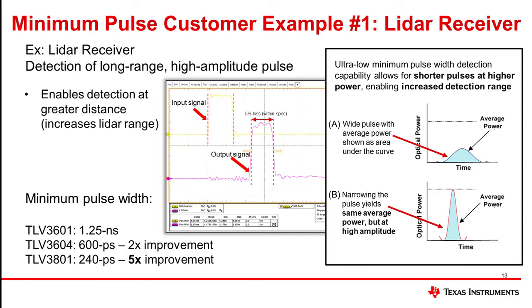But how does this affect a specific application? Going back to the LiDAR receiver, this can actually be really important. We see how the pulse width can reduce the average power from case A to B. If we raise the amplitude but narrow the pulses, we maintain the same average power. This can be helpful in LiDAR receivers where detecting objects at greater distances requires a higher amplitude to detect that return pulse. Greater distance weakens the amplitude of the returning pulse, so for the same average power, a narrower pulse allows us to increase the amplitude and therefore the LiDAR range without increasing the power and violating eye safety standards.